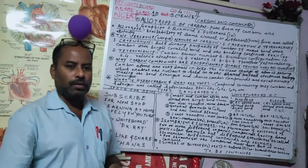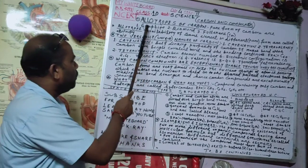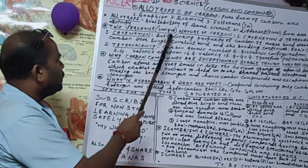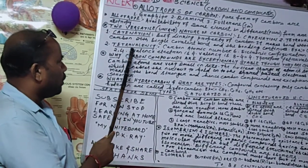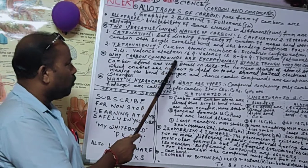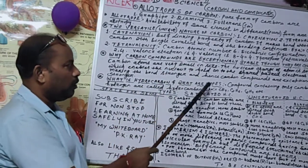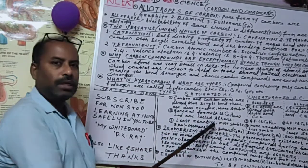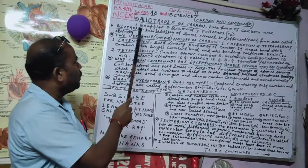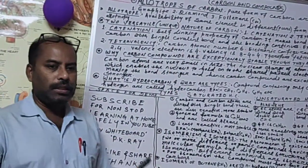So let us come to our main topic. Today's topics will be: allotropes of carbon, the versatile nature of carbon including catenation and tetravalency, why carbon makes stable covalent compounds, what hydrocarbons are, and the types and differences between those types.